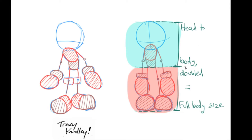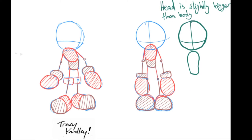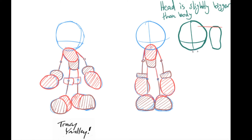The next rule is: head to body doubled equals the full body size. This is a great indication of whether your character is the correct height. When you have the head and body combined, just double that size, and you'll know how long to make the legs and shoes. Another rule is that the head is slightly bigger than the body. Here I've put the body inside the head so you can see how much bigger the head should be. The body should just be slightly smaller in height than the head.